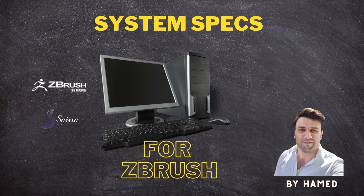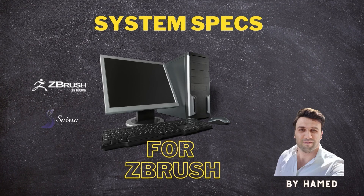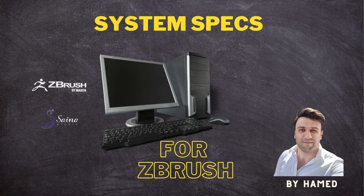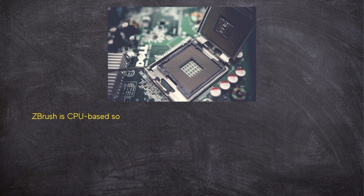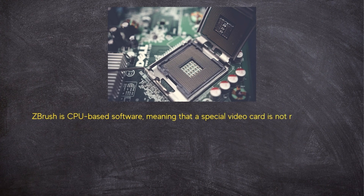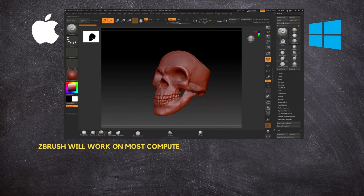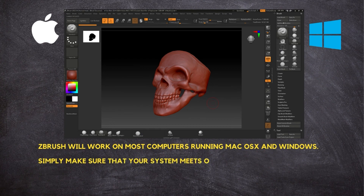Hi, my name is Hamed. In this video, I want to talk about the system specs needed for using ZBrush. ZBrush is CPU-based software, meaning that a special video card is not required to get the best results when running the application. ZBrush will work on most computers running Mac OS X and Windows. Simply make sure that your system meets or exceeds the following minimum requirements.